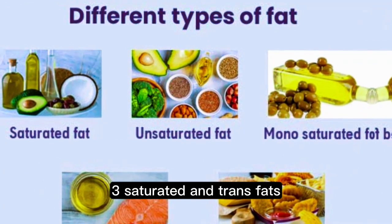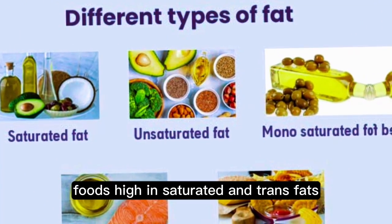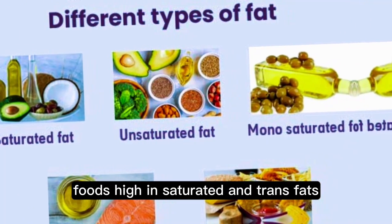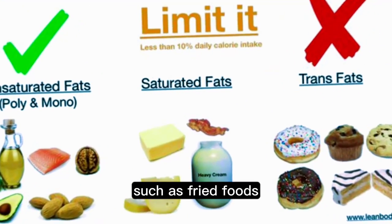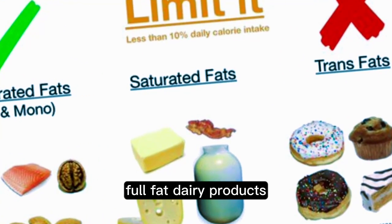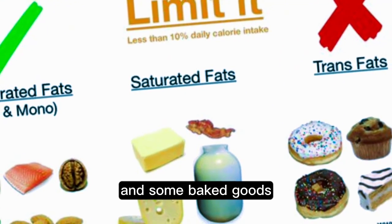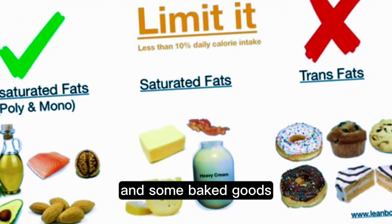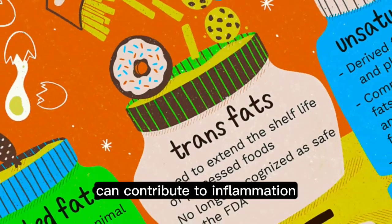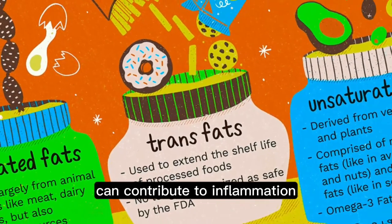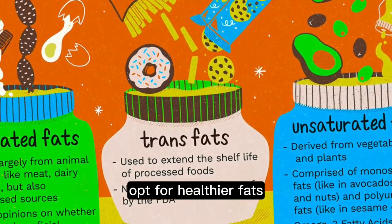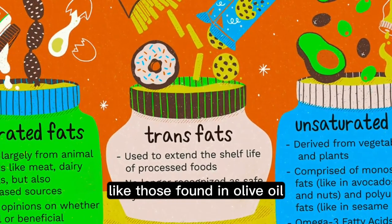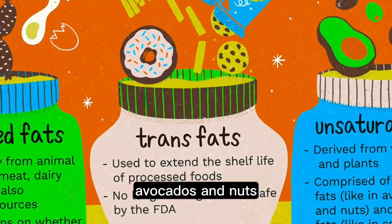3. Saturated and trans fats. Foods high in saturated and trans fats, such as fried foods, full-fat dairy products, and some baked goods, can contribute to inflammation. Opt for healthier fats like those found in olive oil, avocados, and nuts.